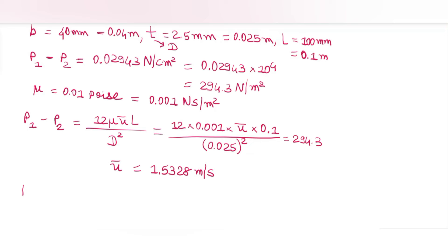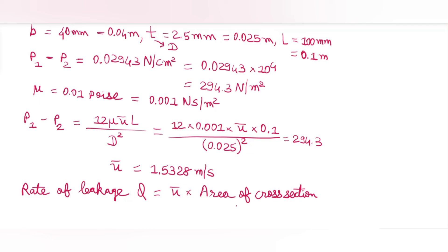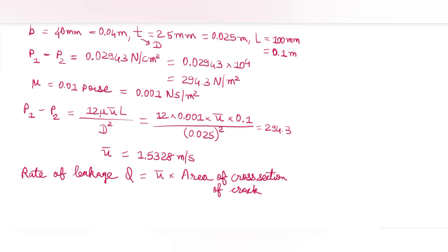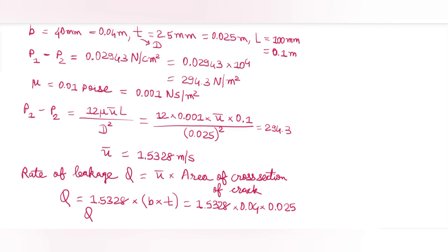From this we find the discharge (rate of leakage): Q = u_bar × area = u_bar × b × t = 1.5328 × 0.04 × 0.0025 = 1.5328 × 10⁻⁴ m³/s, which is 0.1538 liters per second.